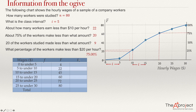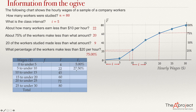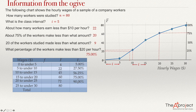Once I have the cumulative frequencies, the cumulative relative frequency is easy to find — just divide the cumulative frequency by the total number (80). So: 4 divided by 80 is 0.05, or 5%; 22 divided by 80 is 0.2750, or 27.50%; 45 divided by 80 is 0.5625, or 56.25%; 60 divided by 80 is 0.75, or 75%; 72 divided by 80 is 0.90, or 90%; and 80 divided by 80 is 100%.